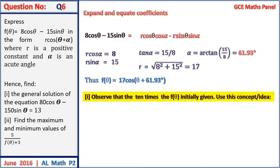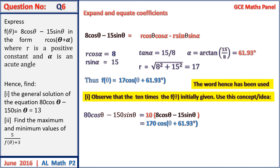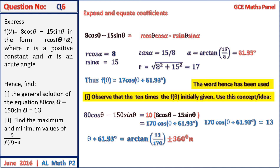Using the result, find the general solution of 80 cos theta minus 150 sin theta equals 13. Observing that the function has been multiplied by 10, this equals 10 times 8 cos theta minus 15 sin theta, which equals 10 times 17 cos of theta plus 61.93 degrees, giving 170 cos of theta plus 61.93 degrees equals 13. Taking the inverse cosine after dividing by 170: theta plus 61.93 degrees equals arccos of 13 on 170 plus or minus 360n degrees, where n is a natural number.